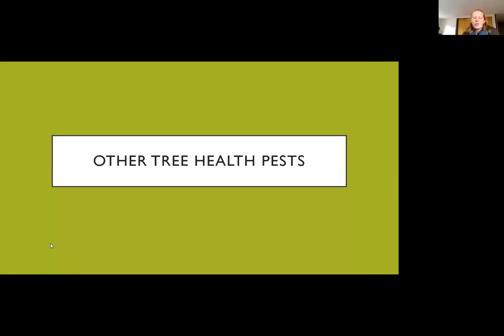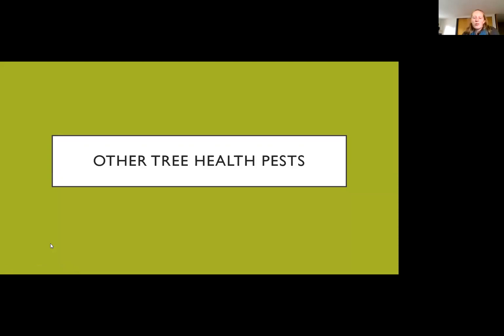There are some other tree health issues I've had a lot of questions about this year. Maple leaf anthracnose is a foliar disease — people are often noticing both maple leaf cutter and anthracnose on the same tree, causing brown leaves that are prematurely dropping and not getting normal fall colors. Increasing ventilation in your stand through thinning and keeping trees as healthy as possible will decrease levels of anthracnose. We had such a wet summer this year, and that wet summer didn't do us any favors in terms of diseases and blights.